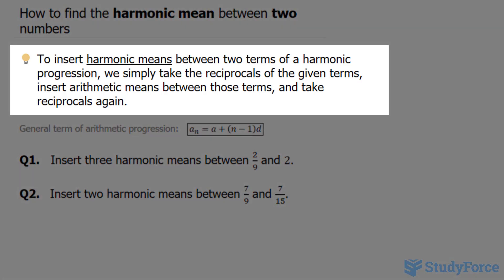To insert harmonic means between two numbers of a harmonic progression, we simply take the reciprocals of the given terms, insert arithmetic means between those terms, and take reciprocals again.